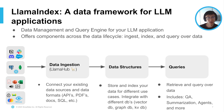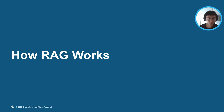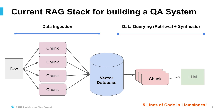We have a wide variety of basic to advanced tools to allow users to retrieve and query over their data for different use cases. This includes solving use cases like question answering, summarization, agentic behavior, and more. Now that we've given an overview of Llama Index, let's talk about how RAG works. The current RAG stack for building a QA system really consists of two main categories: data ingestion and data querying, retrieval, and synthesis.